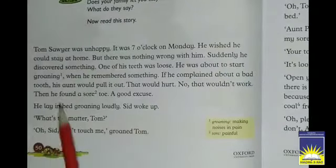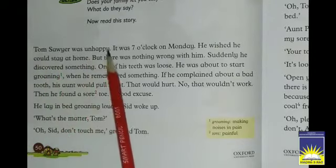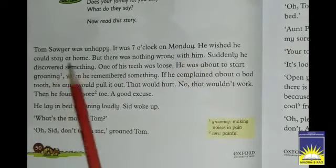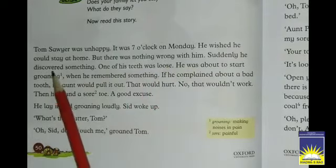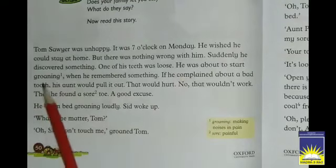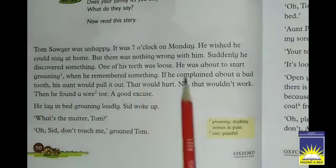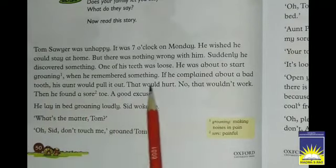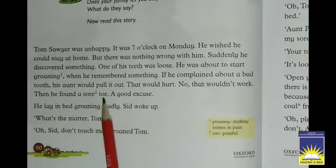Here is page number 50. Tom Sawyer was unhappy. It was 7 o'clock on Monday. He wished he could stay at home, but there was nothing wrong with him. Suddenly he discovered something — one of his teeth was loose. He was about to start groaning when he remembered that if he complained about a bad tooth, his aunt would pull it out. That would hurt. So that would not work. Then he found a sore toe — a good excuse.